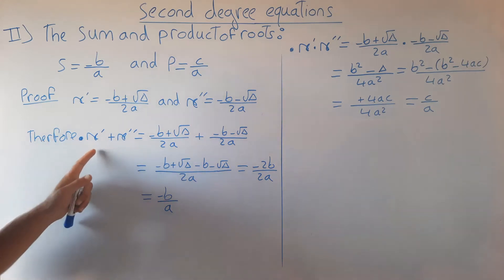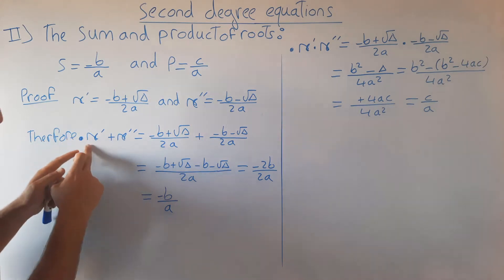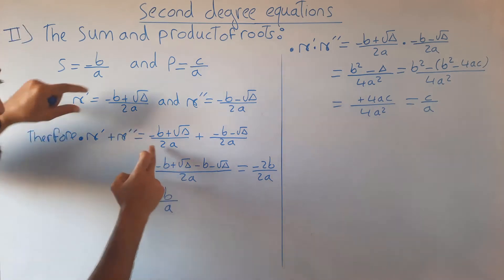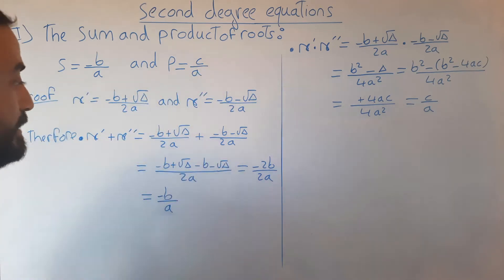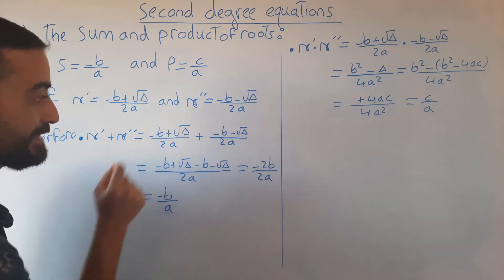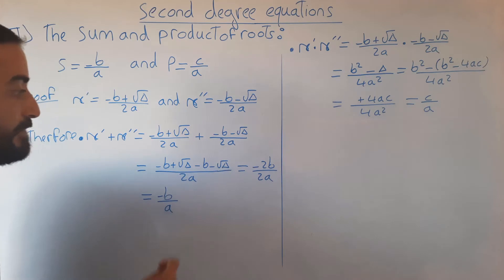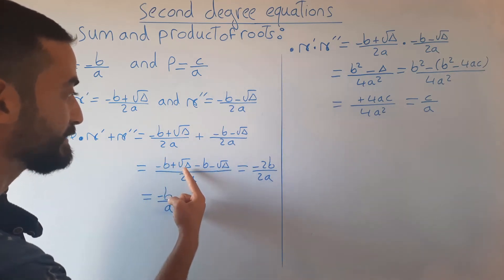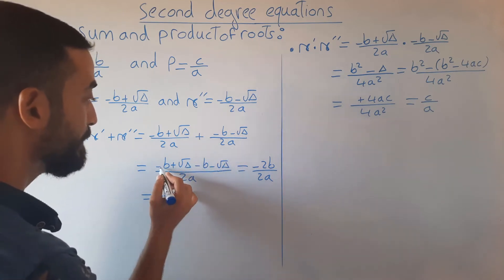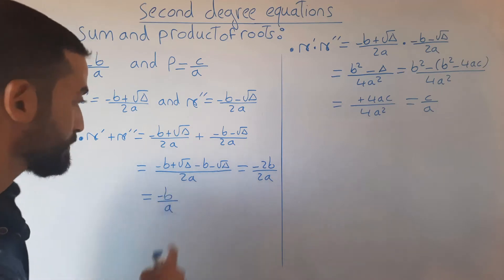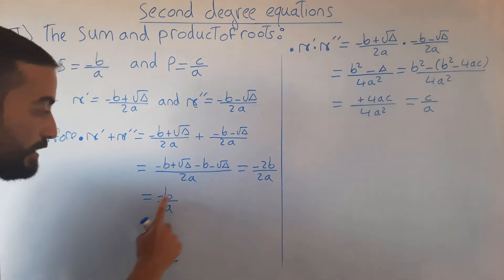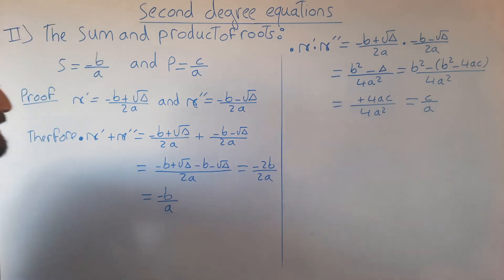Proof: The sum of roots is x' + x'' = (−b − √Δ)/(2a) + (−b + √Δ)/(2a). With common denominator 2a, we get (−b + √Δ − b − √Δ) / 2a. The √Δ terms cancel, and −b − b = −2b, so we get −2b/2a, which simplifies to −b/a.